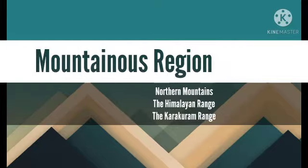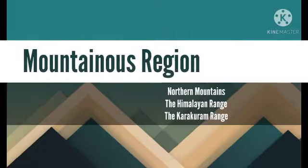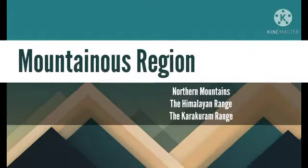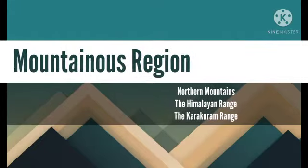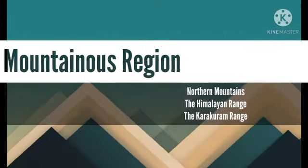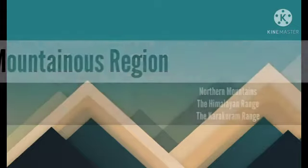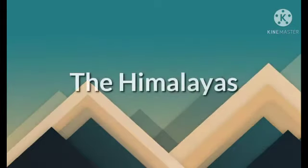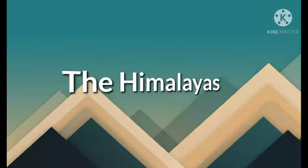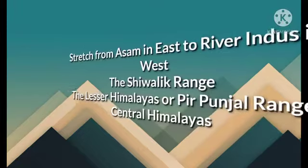In the north mountains, the two important ranges are the Himalayan Range and the Karakoram Range. Today we are going to discuss these two ranges briefly. The Himalayan Range starts from the province of Assam in the east, then spreads across north India and reaches Pakistan till River Indus.